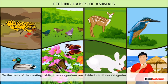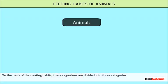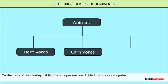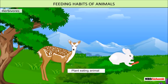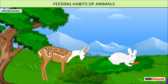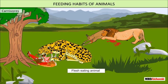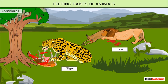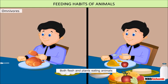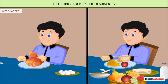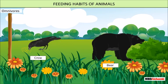Different species of living organisms have different eating habits. On the basis of their food habits, these organisms are divided into three categories: herbivores, carnivores, and omnivores. Organisms that eat only plants are called herbivores, for example cow, rabbit, and horse. Flesh-eating animals are called carnivores, for example lion and tiger. Animals which eat both flesh and plants are called omnivores. Some examples of omnivore animals are bear, crow, and human.